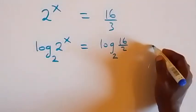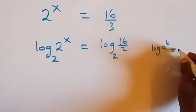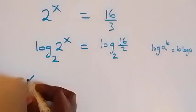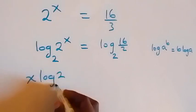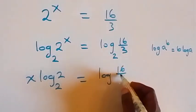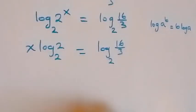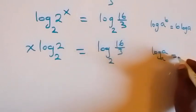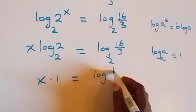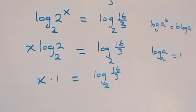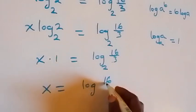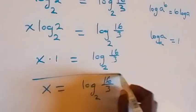Applying the log power rule — log a raised to power b is the same as b log a — we can bring the power x to the front. So we have x times log 2 base 2 equals to log (16 over 3) base 2. Recalling that log a base a equals 1, this gives x times 1 equals log (16 over 3) base 2, so x equals log (16 over 3) base 2.